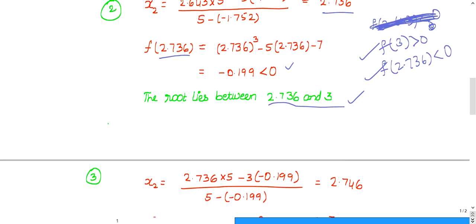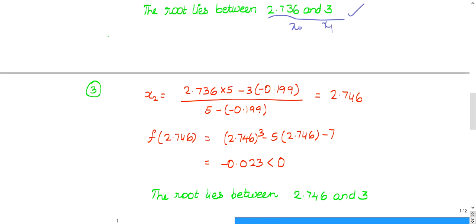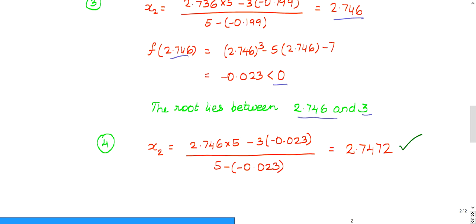Then once again, this will become new x0, this will become new x1. Again you repeat the same process. Once again it is less than 0. So the new root lies between 2.746 and 3. See how many iterations we are doing. Once again you treat it as x0, this you treat it as x1. Then you are going to get 2.7472. So 2.746, this is 2.747. So it is almost similar. When two iteration values are almost similar, then you can stop the iteration at that point.